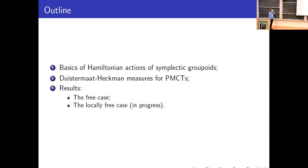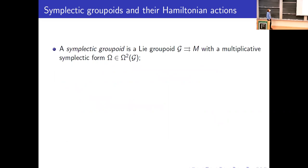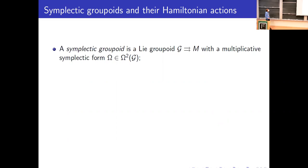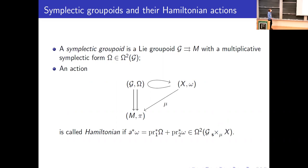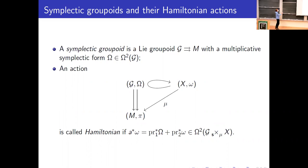At the end I'll talk about some results. A symplectic groupoid is a Lie groupoid with a multiplicative symplectic form. You can think of these as global analogs corresponding to Poisson manifolds. There is a notion of a Hamiltonian action of these groupoids: you have a groupoid action on a symplectic manifold, and you call this action Hamiltonian if you have a certain multiplicativity condition — a notion that generalizes many known notions of Hamiltonian action, in particular the one for group actions.